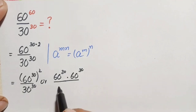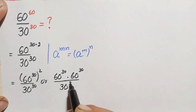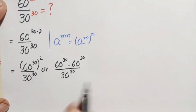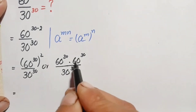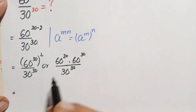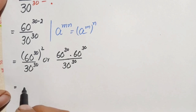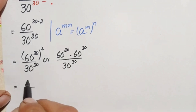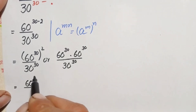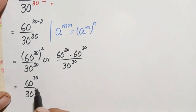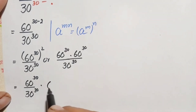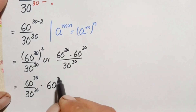Divided by 30 raised to the power 30. We can then separate this term from the other two terms, so this becomes 60 raised to power 30 divided by 30 raised to power 30, times 60 raised to power 30.